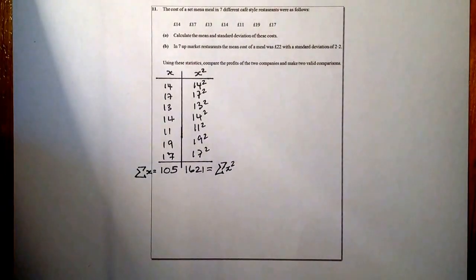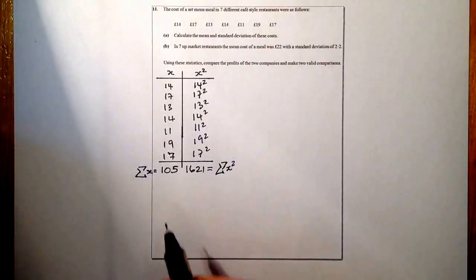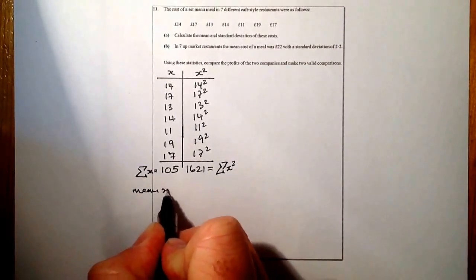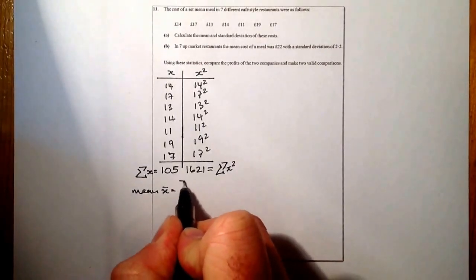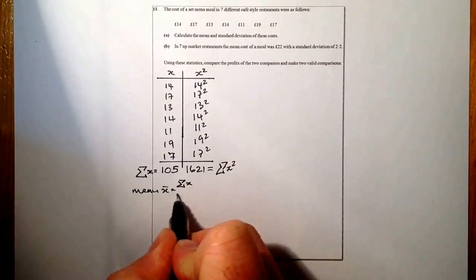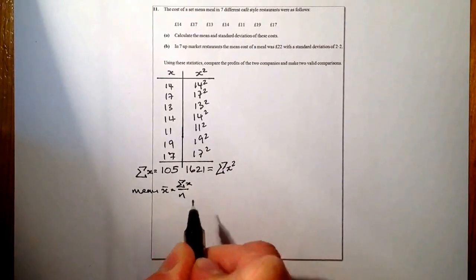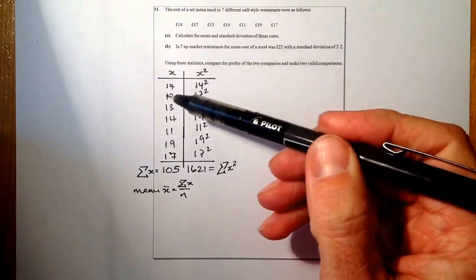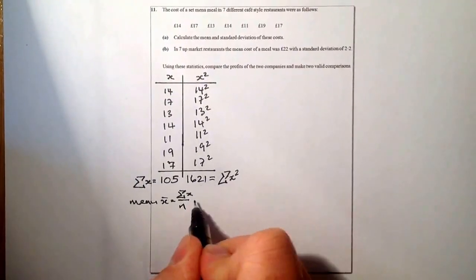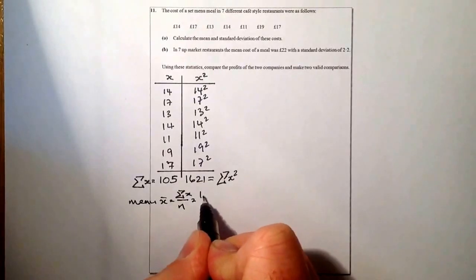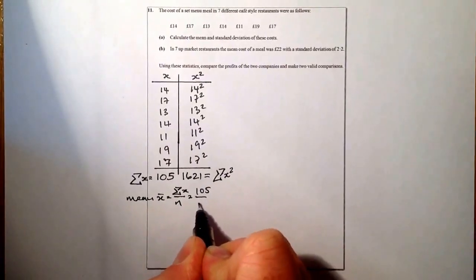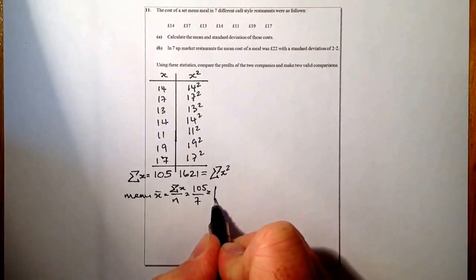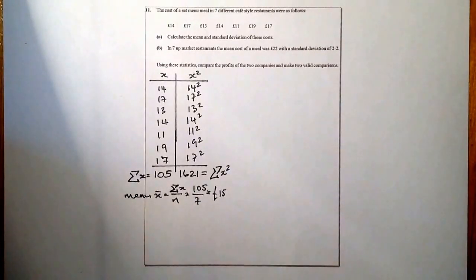The first thing to work out is the mean, or x̄. It's the sum of all the x's divided by the number of restaurants. I've looked at seven café-style restaurants, and the total of all the prices added up is 105. So the mean works out to be £15.